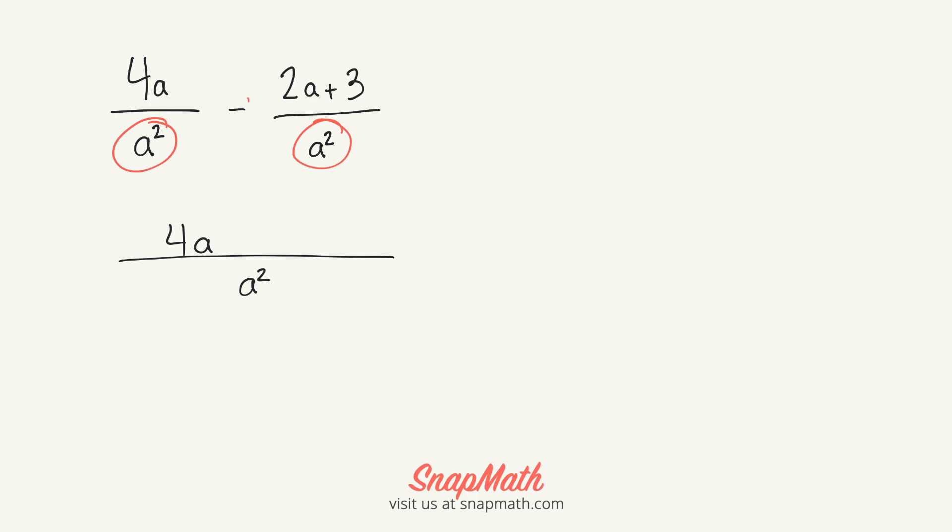Then I have 4a, and this negative right here is going to distribute to both the 2a and the 3. So that's going to turn this into minus 2a and minus 3.